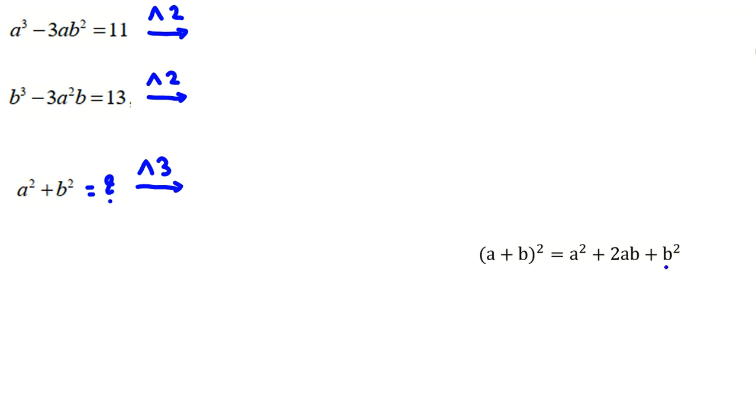So for squaring both sides, we use this identity. (a³ - 3ab²)² = 11², which is 121.